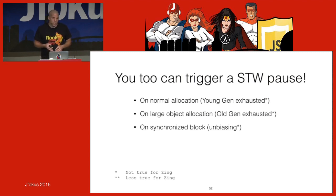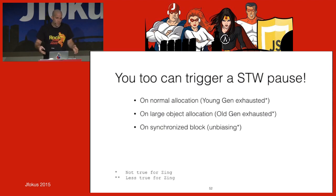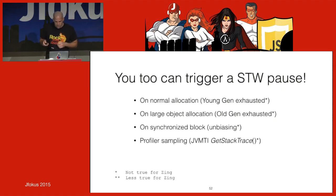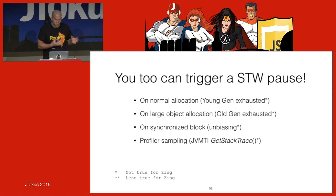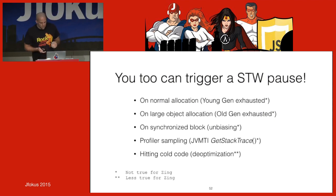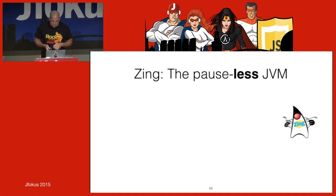Hitting a synchronized block can trigger a stop-the-world: if a biased lock is now contended by two threads, everyone stops while the lock is unbiased. Profiler sampling is an under-appreciated issue — almost every profiler has safe-point bias, and as a side effect of using it you're inflicting stop-the-world pauses on your JVM. They might be short, but everybody stops for you to take a picture.